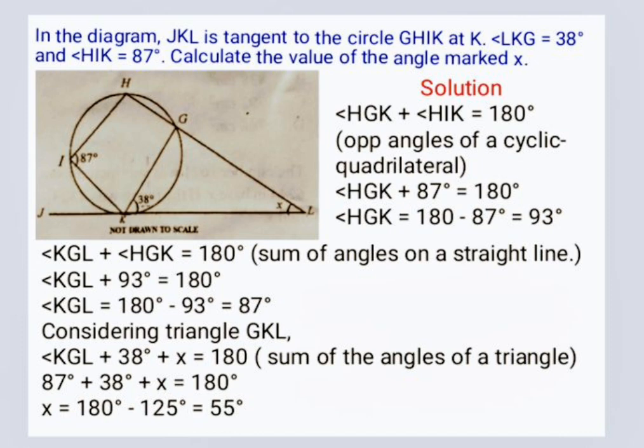So angle KGL plus 93 degrees is equal to 180 degrees. Angle KGL is equal to 180 minus 93 degrees which is equal to 87 degrees. Angle KGL plus 38 degrees